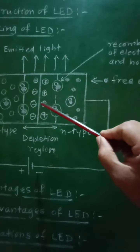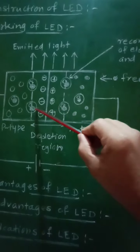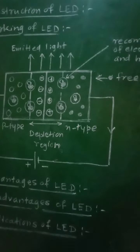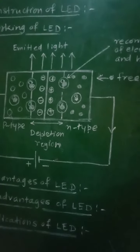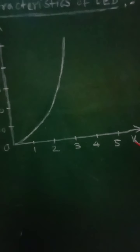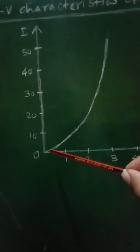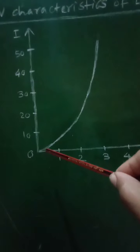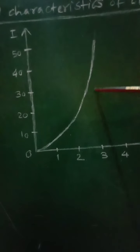Due to the recombination of electrons and holes at the junction, light is emitted. The IV characteristics of the LED show current plotted along the Y-axis and voltage along the X-axis. As forward bias voltage increases, the forward bias current goes on increasing.